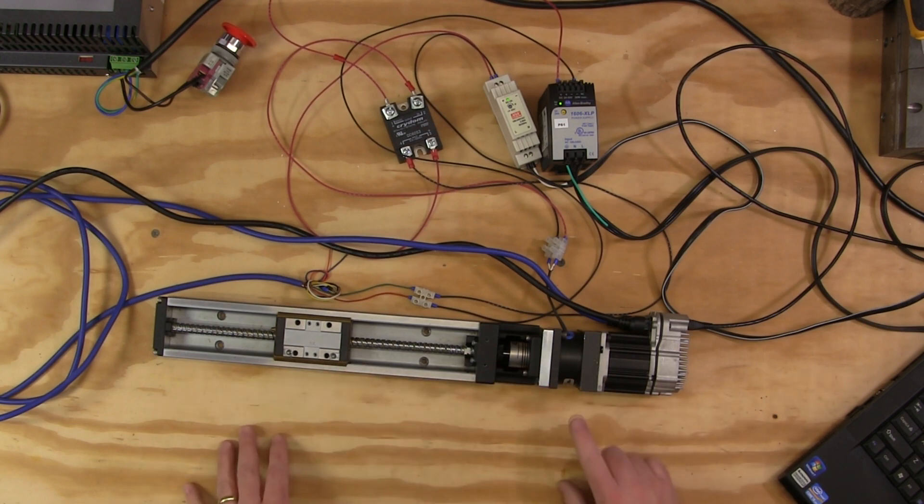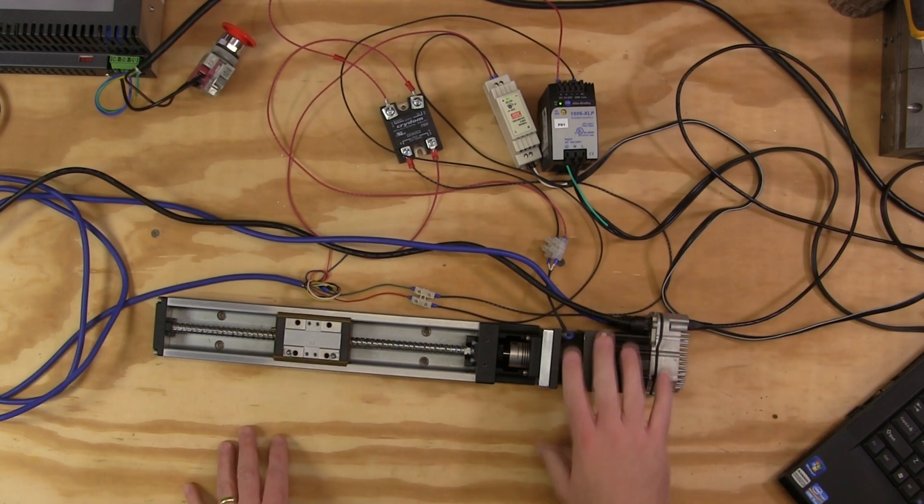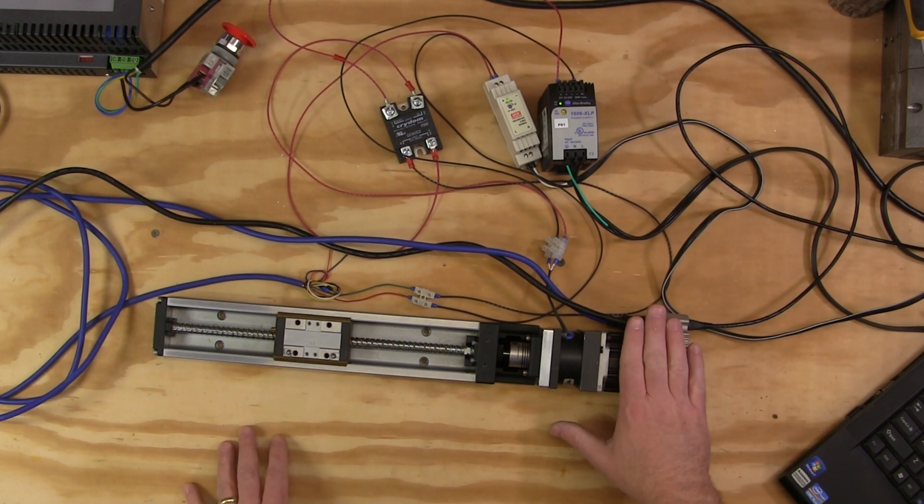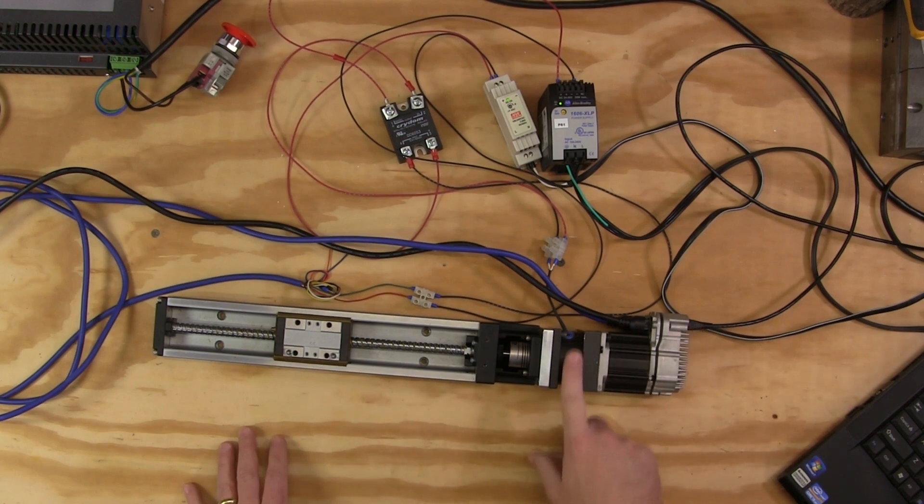Now in this scenario, we've kind of got double protection because if the motor is enabled, it's holding the load and the brake is released. If the motor gets disabled or loses power, then the brake also loses power and it shuts down motion and it does not allow rotation.